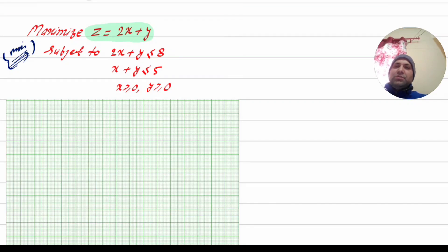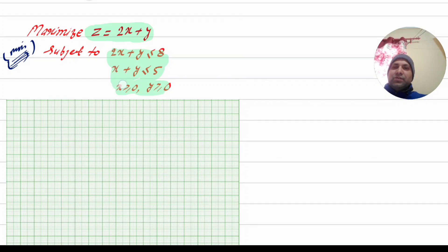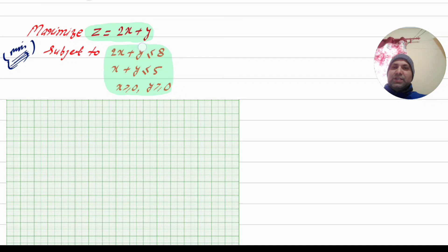The other part has inequalities 1, 2, 3, 4. We can divide the two parts. The linear programming problem is complete — this covers both the simplex method and graphic method. We can work with two components: minimizing or maximizing.